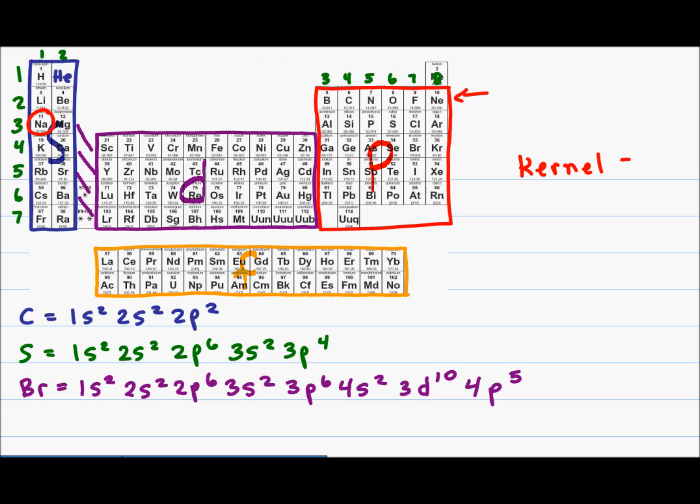So your kernel is going to include your nucleus plus your noble gas configuration. If we specify the kernel of a noble gas, everything within that atom is going to be self-understood. So where do we find the outer electrons?